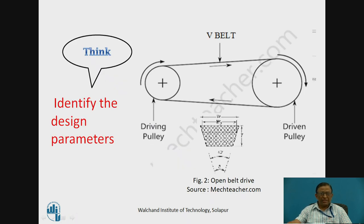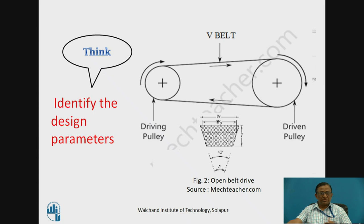Here we find the belt drive system in which there is a driving pulley, a driven pulley, and a continuous belt passed. In this case, we are talking about the V-Belt, which has a trapezoidal cross section and uses the frictional principle to transmit power at the edges. These edges and the groove in the pulley develop a frictional force which causes the required power transmission.